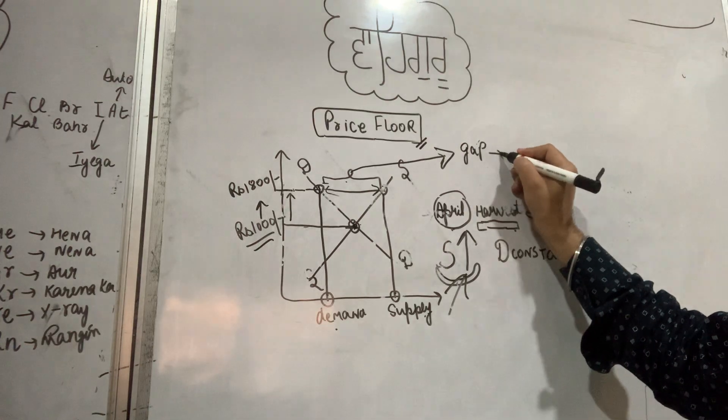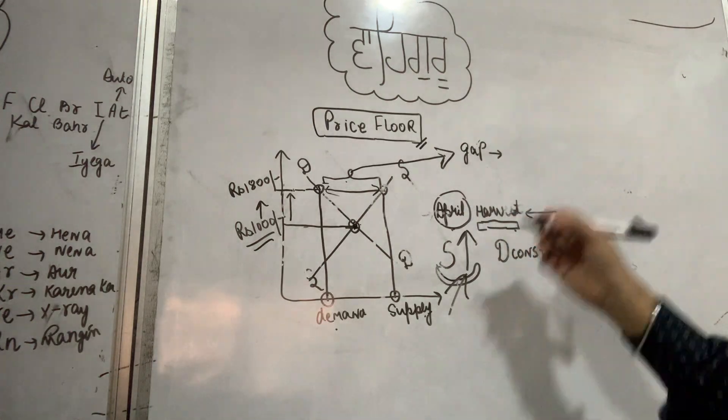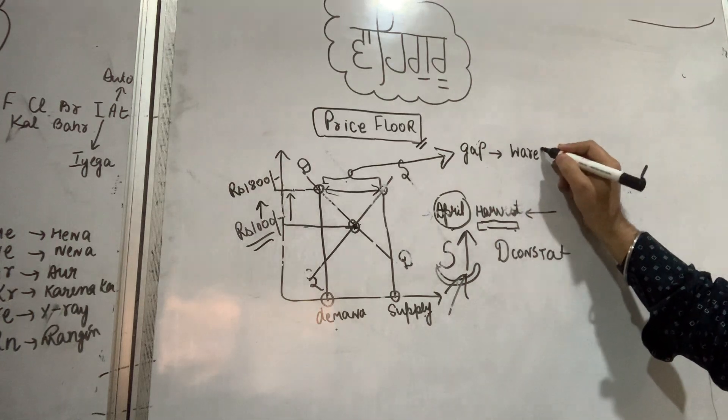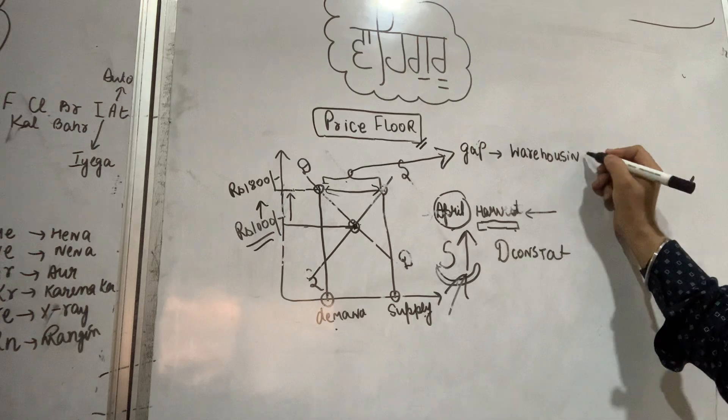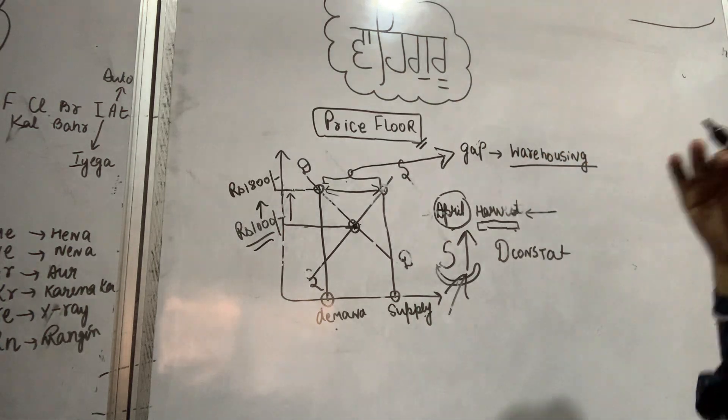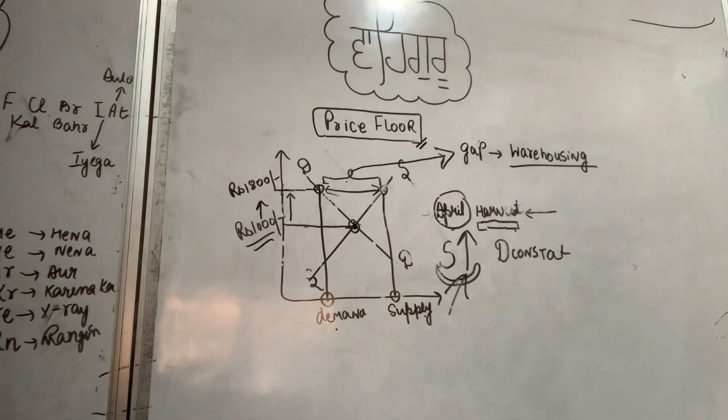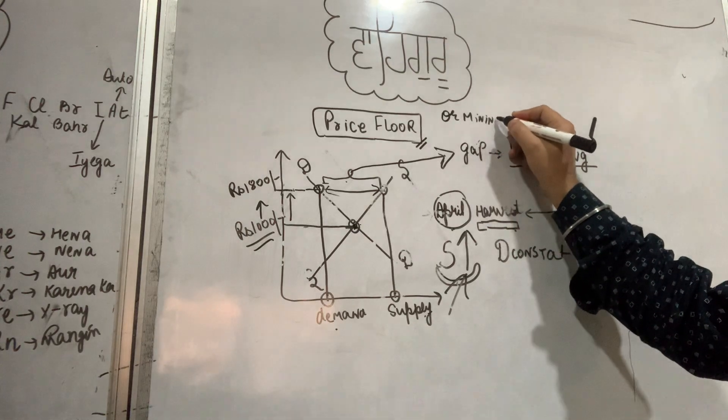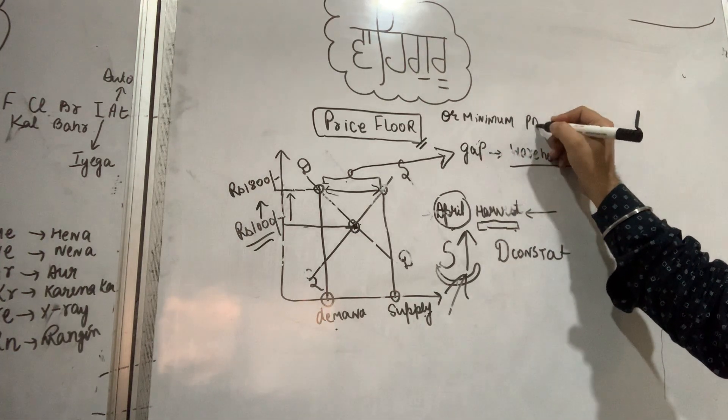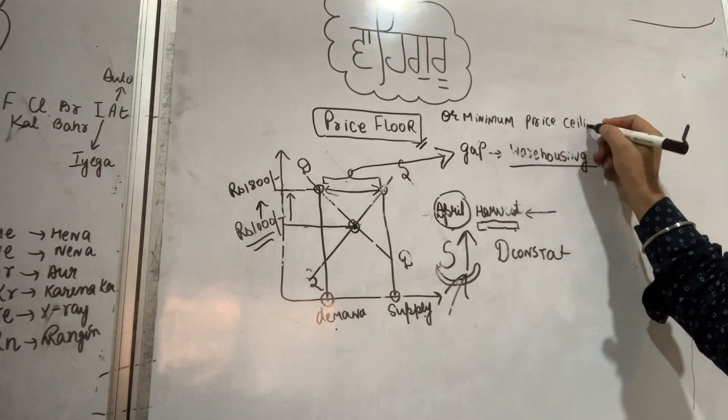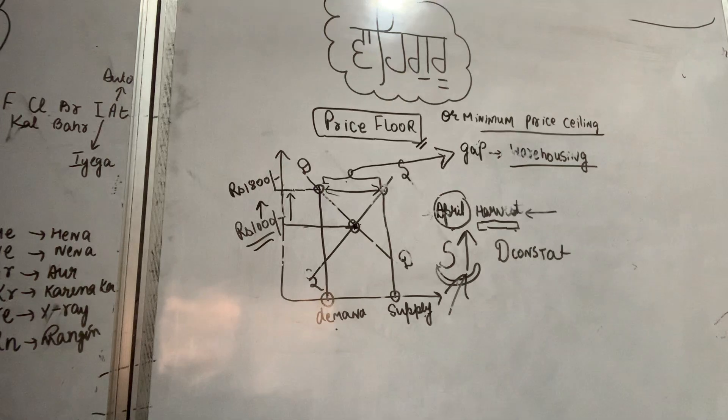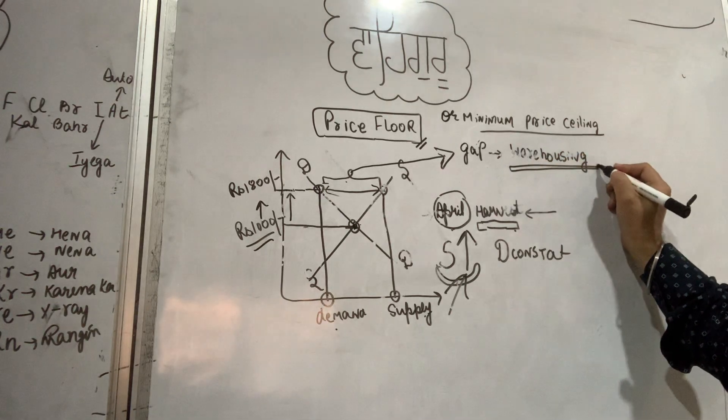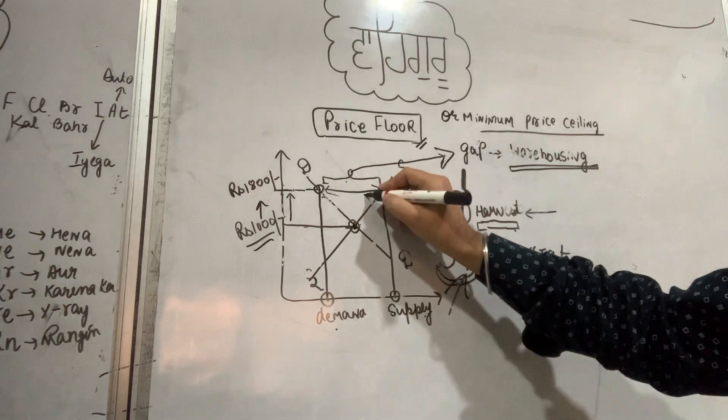This gap is managed by warehousing. You see those FCI godowns throughout India. This gap is managed through warehousing. Warehousing manages this gap.